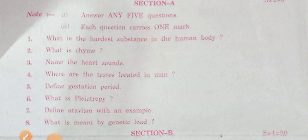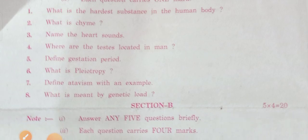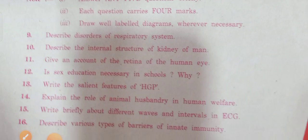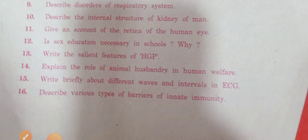What is the hardest substance in the human body? What is chyme? Name the heart sounds. Where are the testes located in man? Define gestation period. What is pleiotropy? Define atavism with an example. What is meant by genetic load? Describe disorders of the respiratory system. Describe the internal structure of the kidney of man. Give an account of the retina of the human eye. Is sex education necessary in schools and why? Write the salient features of ECG. Explain the role of animal husbandry in human welfare. Write briefly about different waves and intervals in ECG. Describe various types of barriers of the innate immune system.